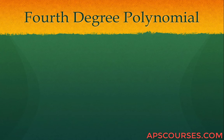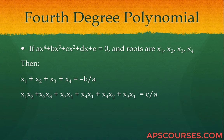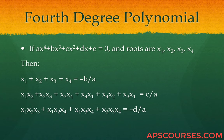For a fourth-degree polynomial: if ax to the power 4 plus bx cubed plus cx squared plus dx plus e equals 0 with roots x1, x2, x3, x4, then sum of the 4 roots is minus b by a; sum of roots taken 2 at a time — there are 6 combinations — is c by a; sum of roots taken 3 at a time is minus d by a; and the product of all roots is e by a. The alternating signs are minus, plus, minus, plus.